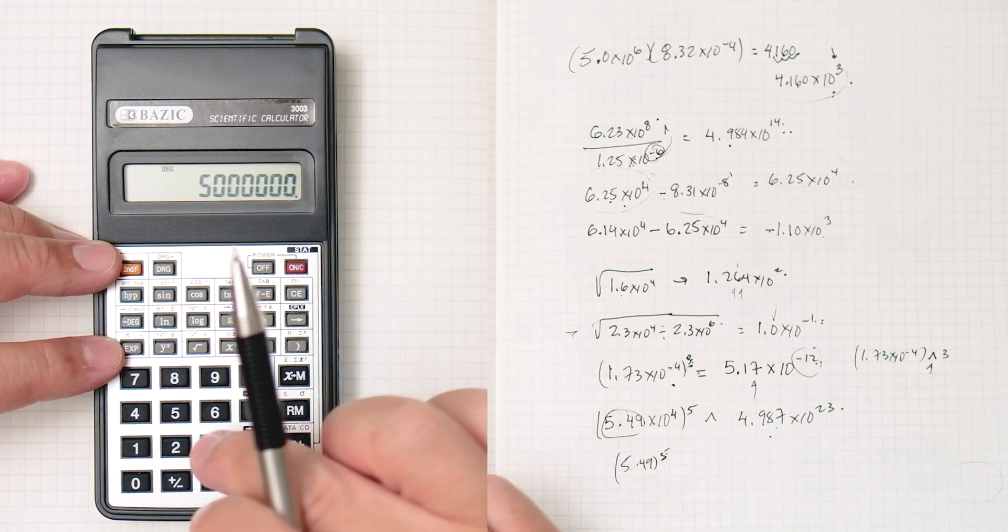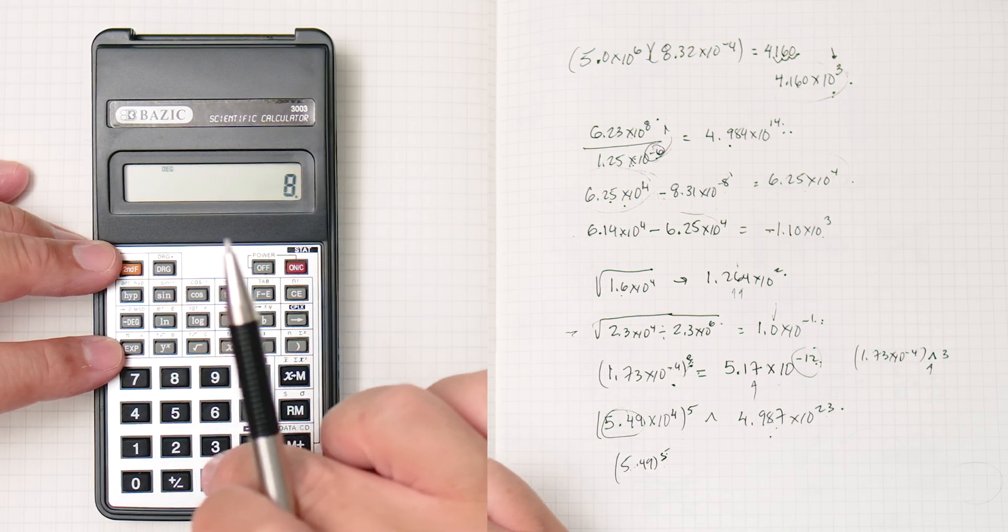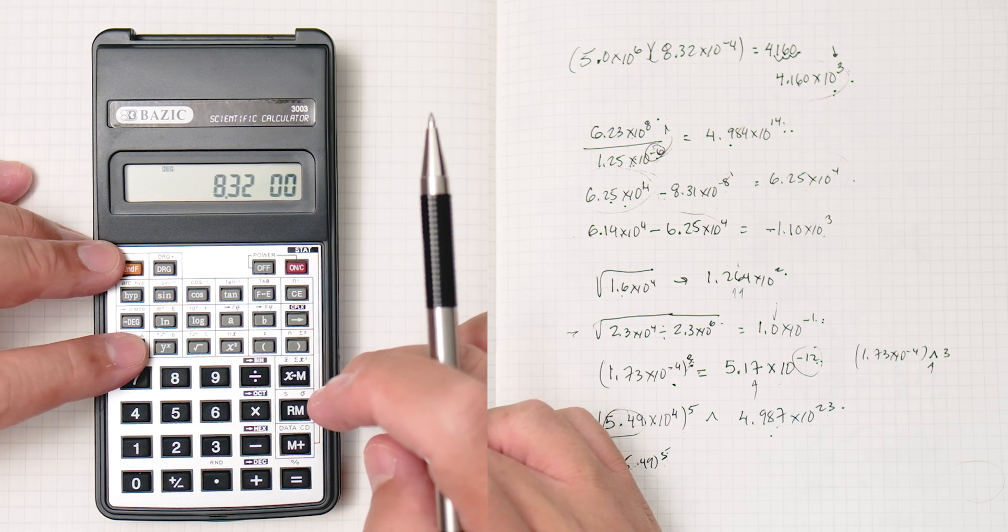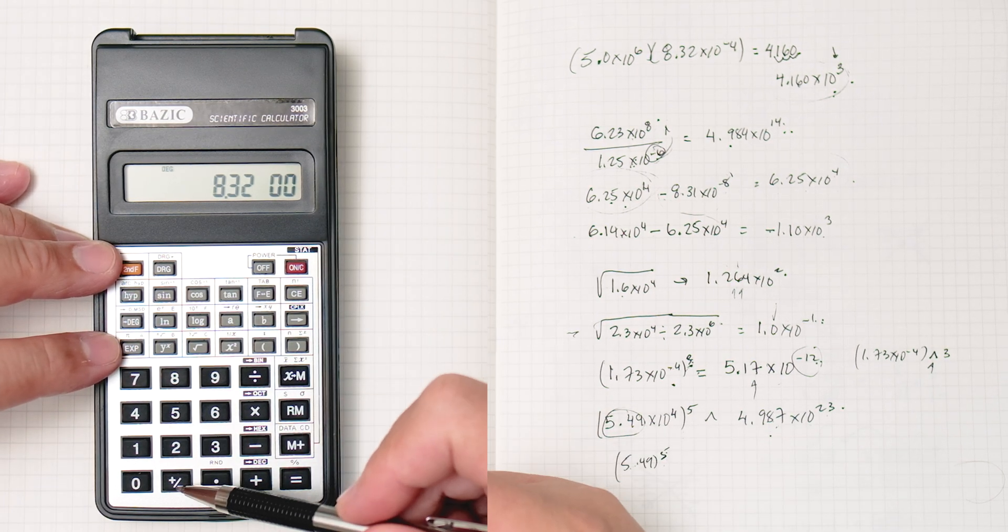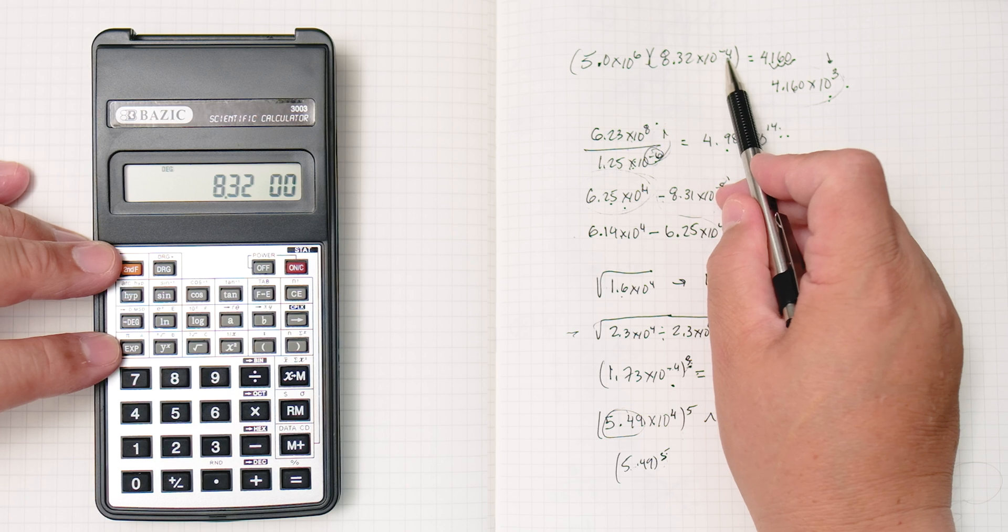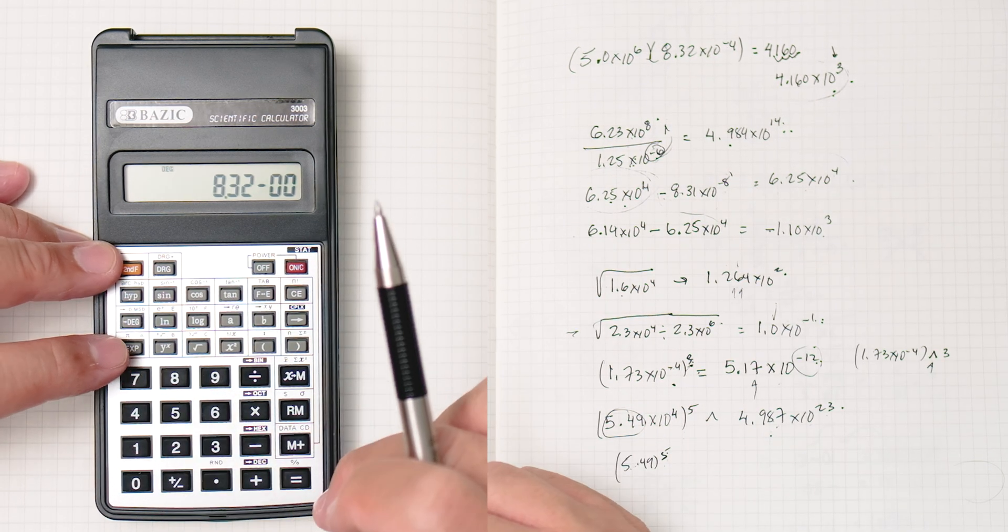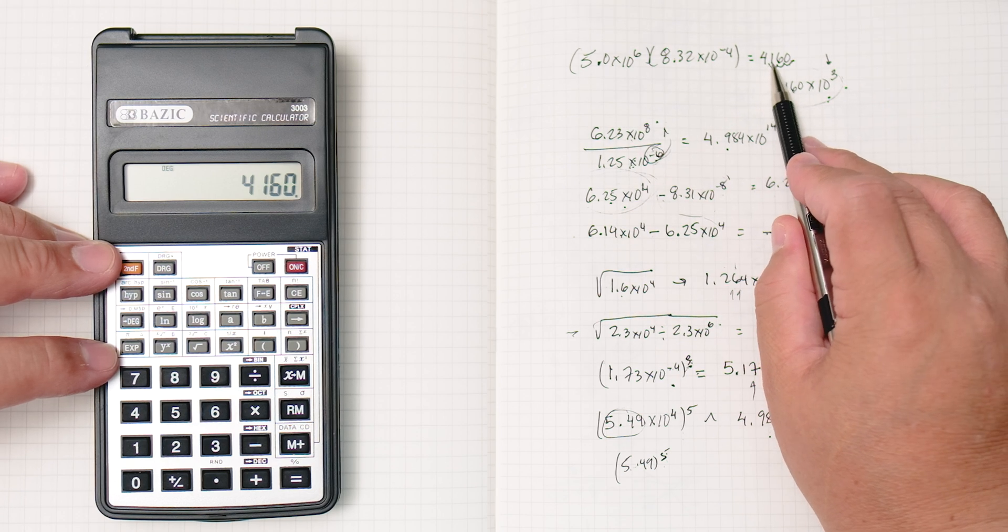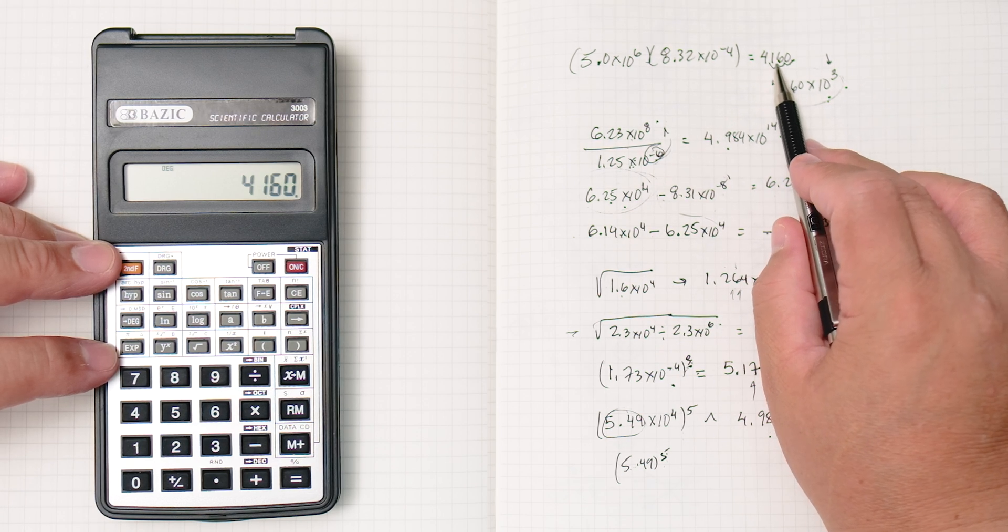And it writes out the number for us, 8.32, right, exponent, negative. So we've got to, this is a negative 4, so we've got to press negative 4, enter, and then it gives you 4,160.